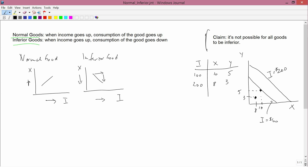It's pretty clear that even though I've only used X and Y, that is two goods, that you can construct a similar proof for an arbitrary number of goods. And that completes the proof of this claim that it's not possible for all goods to be inferior. You can have almost all goods being inferior, but you can't have all goods being inferior.